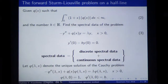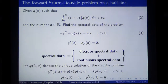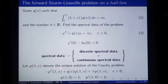What does it mean to solve this Sturm-Liouville problem on a half line? This means to find the discrete spectral data and the continuous spectral data. In order to explain what they are, I need to introduce one more notation, which I will use through the whole talk.